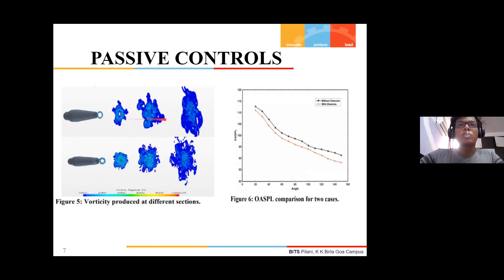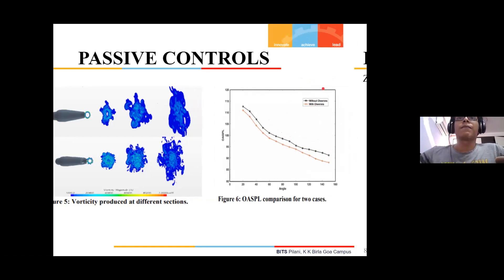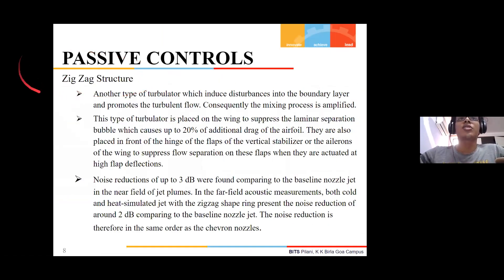The noise reduction can be seen with this graph which plots the overall sound profile level. Clearly, at least a two-decibel difference is seen with the chevron nozzle as compared to the without-chevron nozzle. Next, we looked at the zigzag structure.